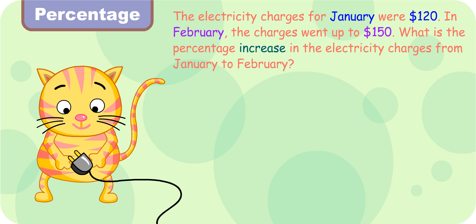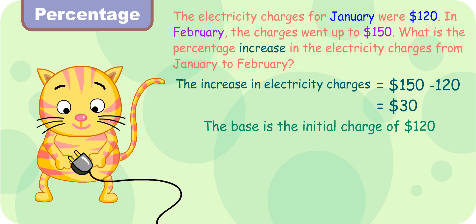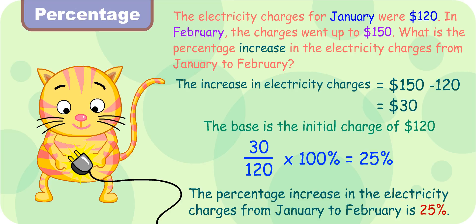Let's try one more question. The electricity charges for January were $120. In February, the charges went up to $150. What is the percentage increase in the electricity charges from January to February? The increase in electricity charges is $30. The base is the initial charge of $120. So 30 over 120 times 100% is 25%. Thus, the percentage increase in the electricity charges from January to February is 25%.